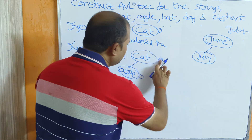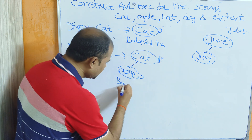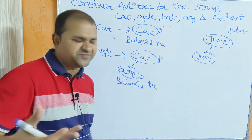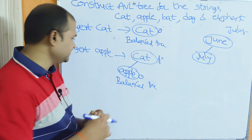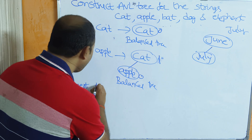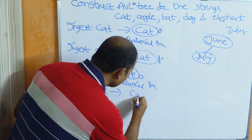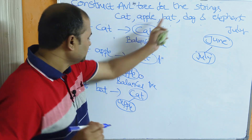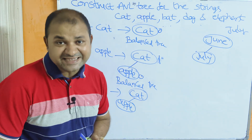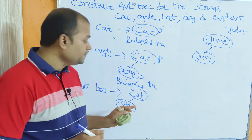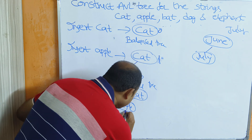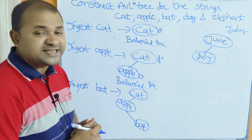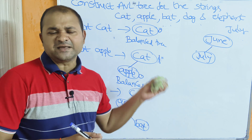Next, insert the third node 'bat'. The previous tree has root 'cat' with left child 'apple'. Compare 'b' with 'c' — b is less than c, so go left. Compare 'b' with 'a' — b is greater than a, so bat is inserted as the right child of apple. We always calculate the balance factor from the leaf node up to the root node.